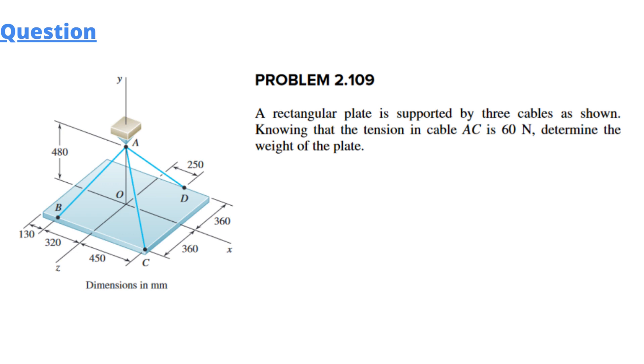tension in cable AC is 60 Newton, determine the weight of the plate. As you can see, this is a rectangular plate with four sides A, B, C and D. The midpoint is the origin point we have concluded with zero